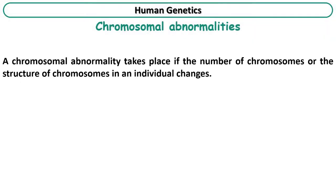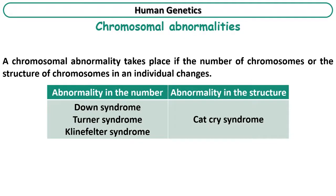A chromosomal abnormality takes place if the number of chromosomes or the structure of chromosomes in an individual changes. Many cases will be studied: Down syndrome, Turner syndrome, and Klinefelter syndrome in case of abnormality in the number, and Cat Cry syndrome in case of abnormality in the structure.